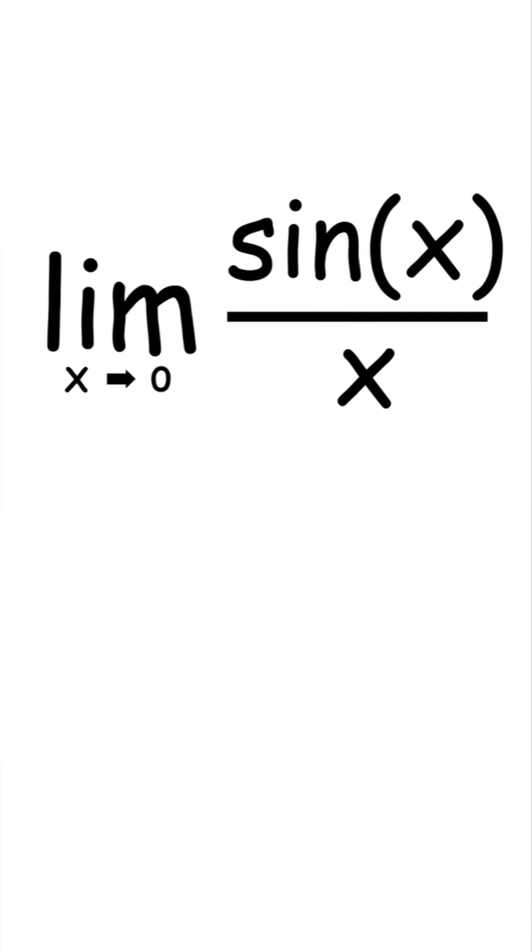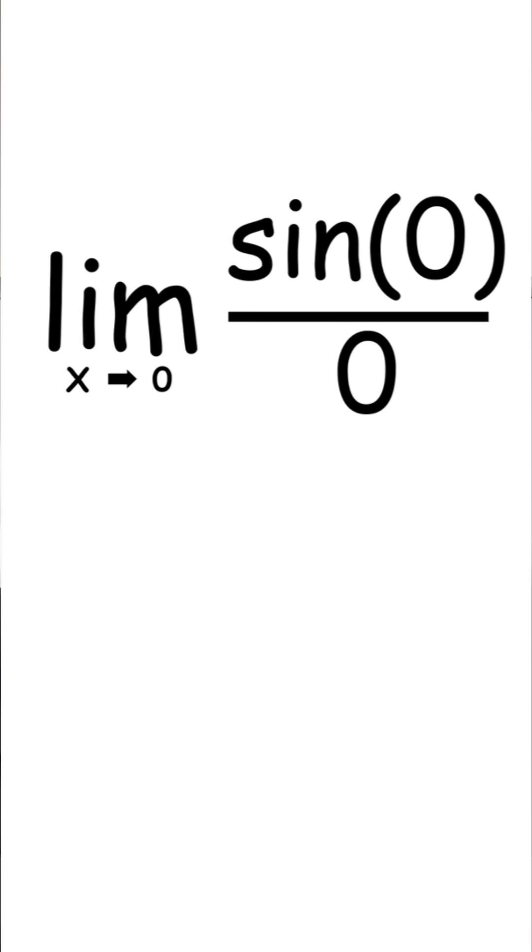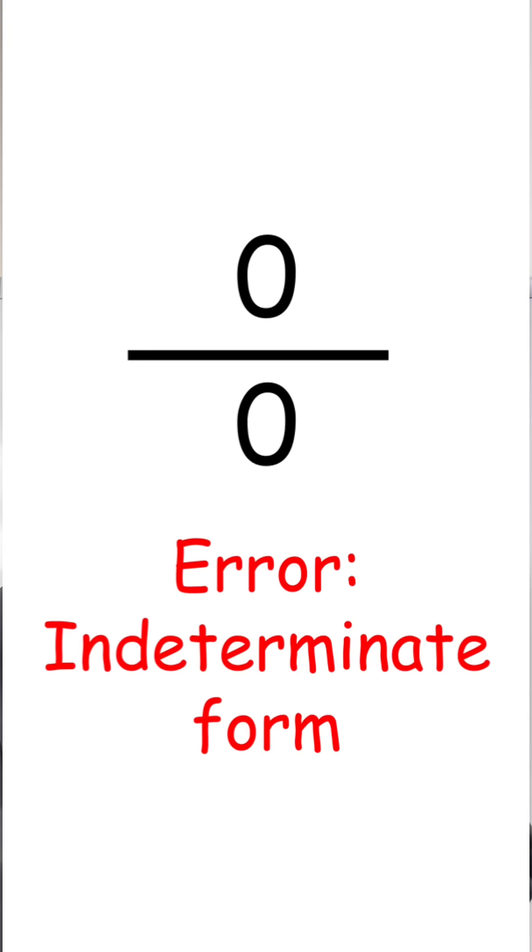Hey you, find this limit. The limit is x approaching 0 of sine of x over x. Chances are you probably just plugged in 0 to both, and that would make it 0 over 0 since the sine of 0 is 0. So what do we do in this case when taking the limit gives us an indeterminate form like 0 over 0 or infinity over infinity?